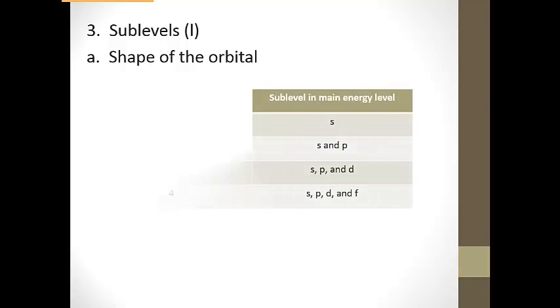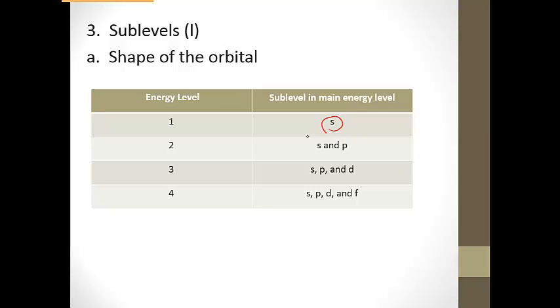So then let's look at the sublevels. Okay, within each one of those energy levels, we have what we call these sublevels. And that is the shape of our orbital, is what the sublevel is. So when we are in the first energy level, the first energy level only has one sublevel in it. And it's called an s. And the next several slides we'll take a look at what those shapes are.